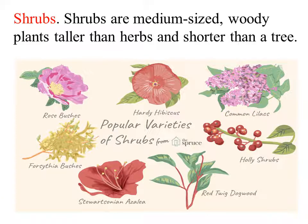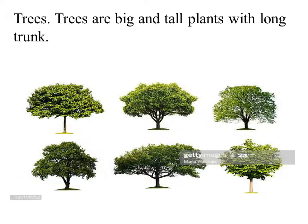Shrubs are medium-sized plants — taller than herbs and shorter than trees. You can see different shrub names here in the slide.